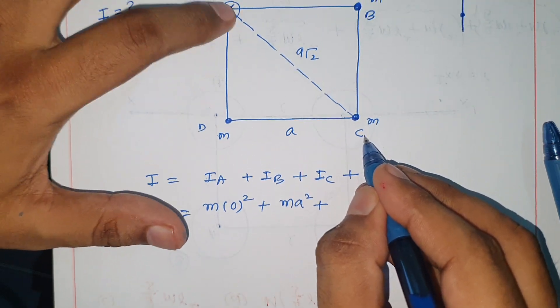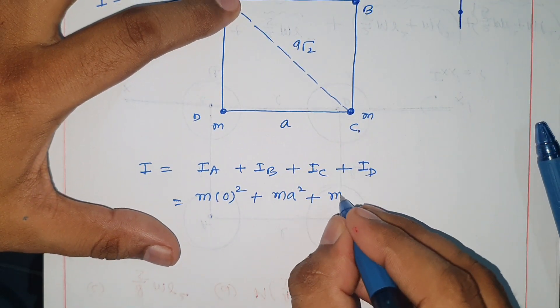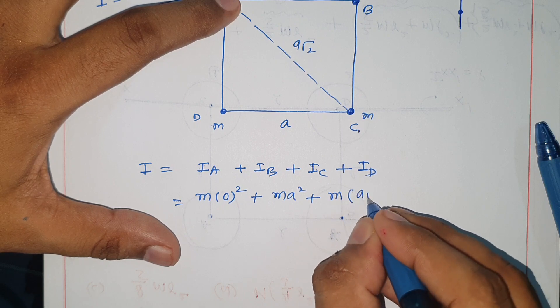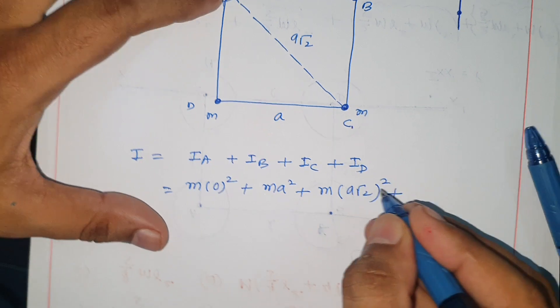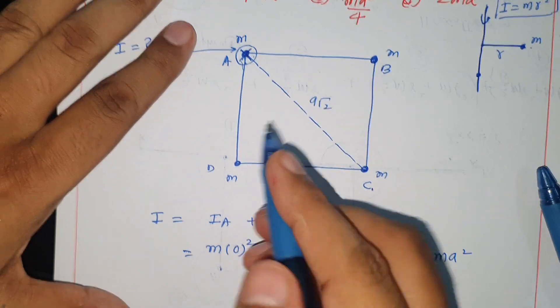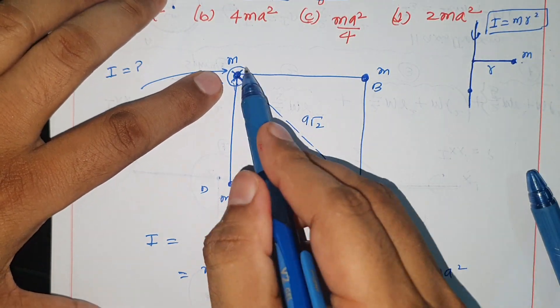For C, the perpendicular distance is a root 2. Plus I_D equals m times a squared.